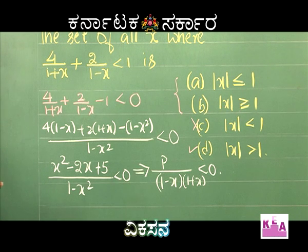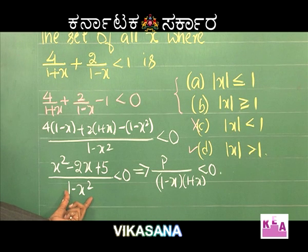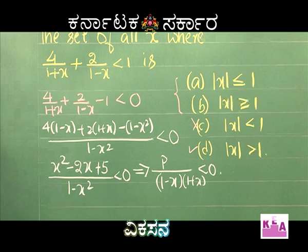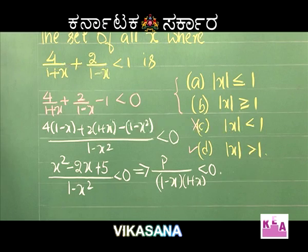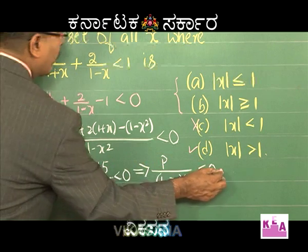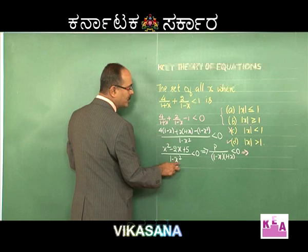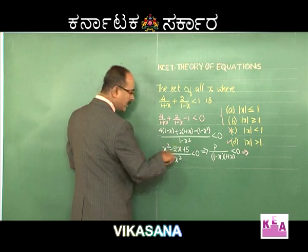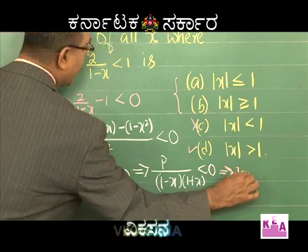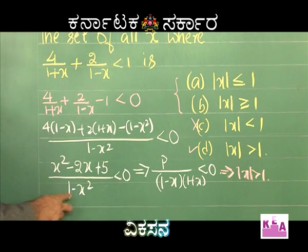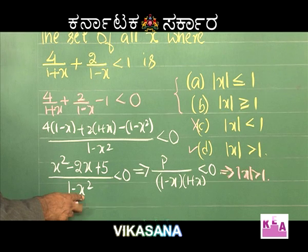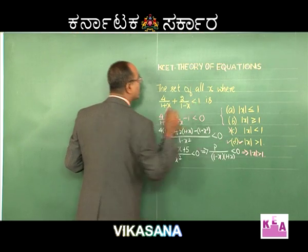Since the numerator is positive, the denominator must be negative. So 1 - x² < 0, which means x² > 1, or |x| > 1. Therefore option D is correct. To summarize: 1 - x² is negative implies x² > 1, which means x > 1 or x < -1, i.e., |x| > 1. Option D is correct.